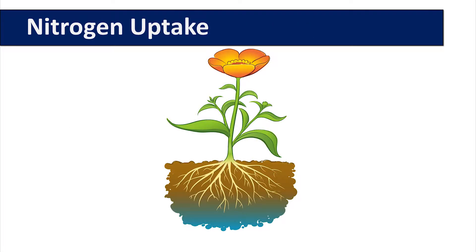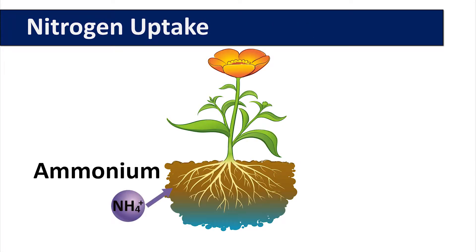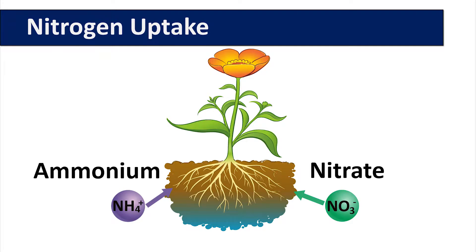Nitrogen can be taken up in two forms by plants: as either ammonium or nitrate. Ammonium is taken up passively.